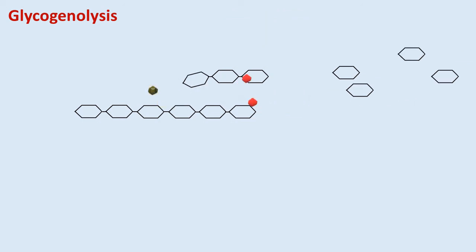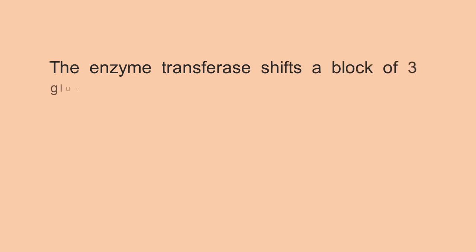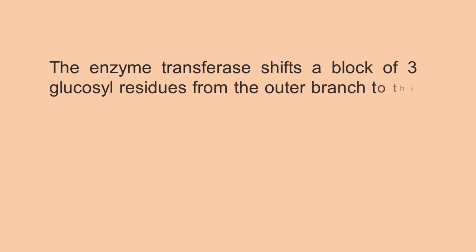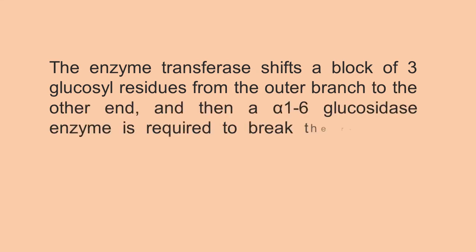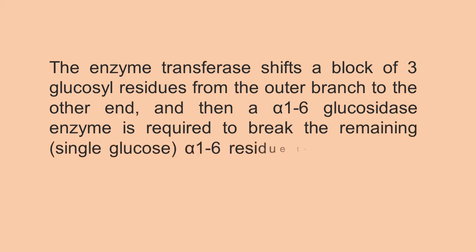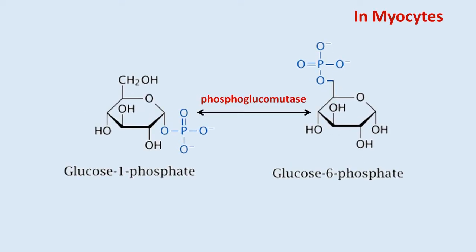In this situation, a debranching enzyme is necessary to straighten out the chain in that area. The enzyme transferase shifts a block of 3 glucosyl residues from the outer branch to the other end. Then an alpha-1,6 glycosidase enzyme is required to break the remaining single glucose alpha-1,6 residue in the new linear chain. After all this is done, glycogen phosphorylase can continue. Glycogen is left with one fewer glucose molecule, and the free glucose molecule is in the form of glucose-1-phosphate.